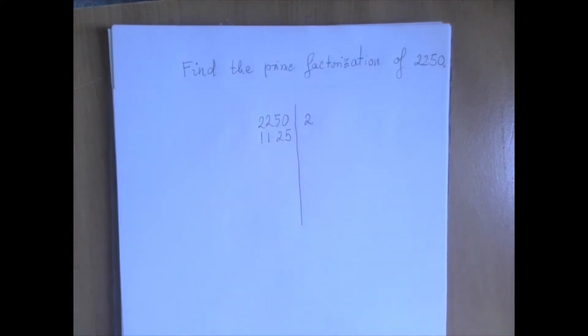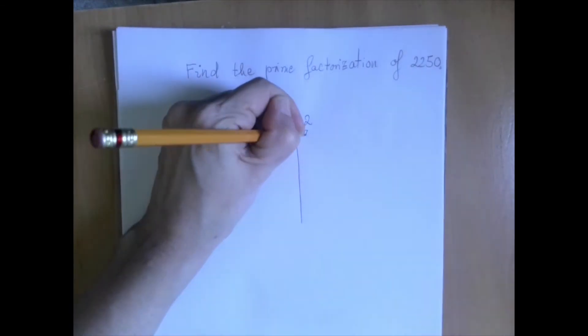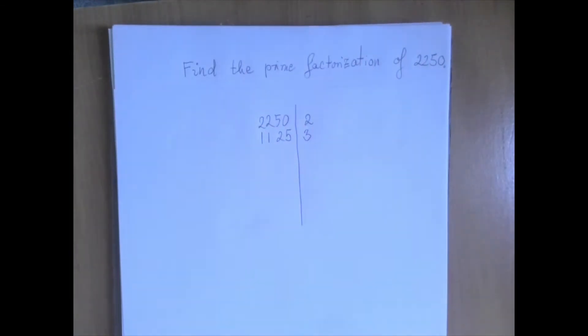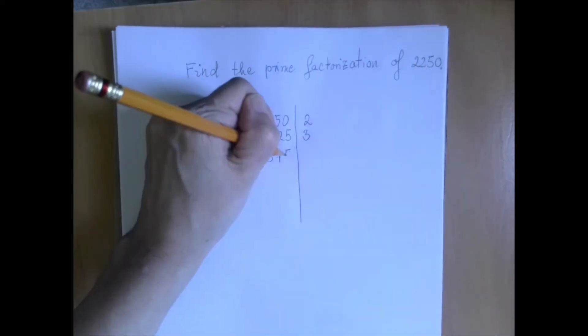Is this number divisible by 3? If we add the digits, we get 9, which means that this number is divisible not only by 3, but actually by 9. So we found the prime factor 3. We write it down here, and we're going to divide. 1125 divided by 3 is 375.